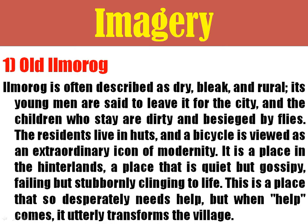Wanja was a young lady who later engaged in prostitution, and Karega came as an assistant teacher in the village, helping Munira in the school. We also see the residents' living conditions, and the bicycle is viewed as an extraordinary icon of modernity. Somebody who has a bicycle is regarded as a great person in Ilmorog village. It is a quiet place and the people try to help each other, and later — before the end of the novel — the village was transformed.